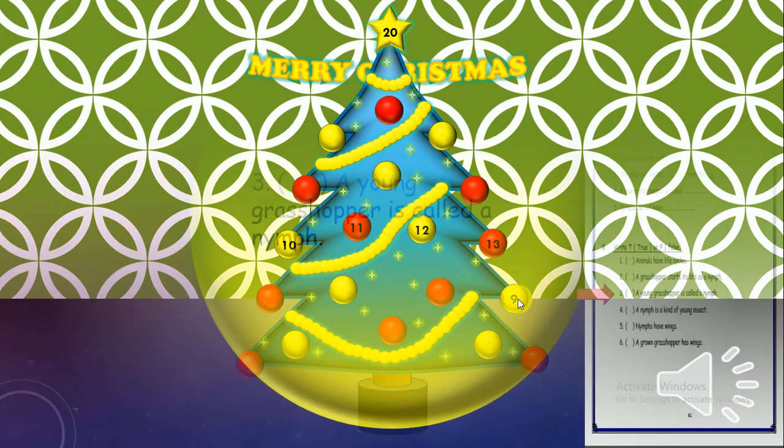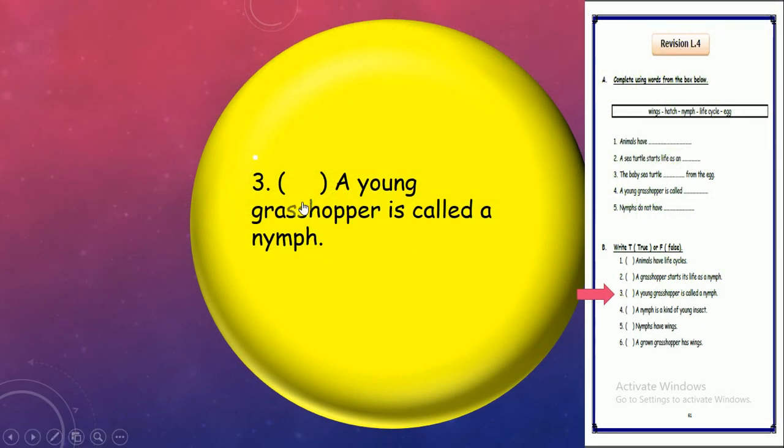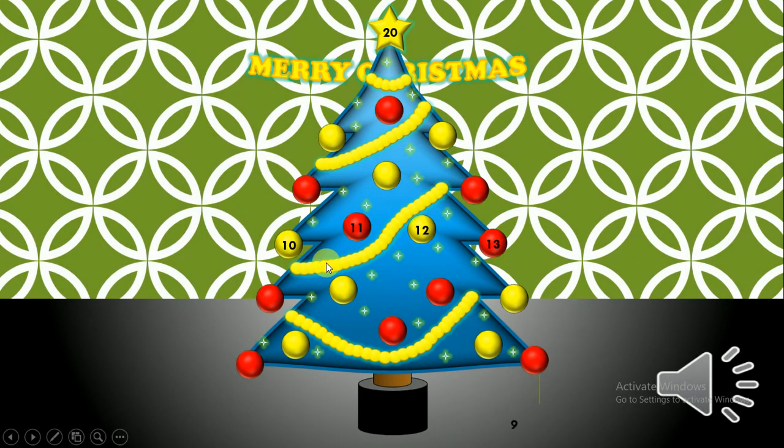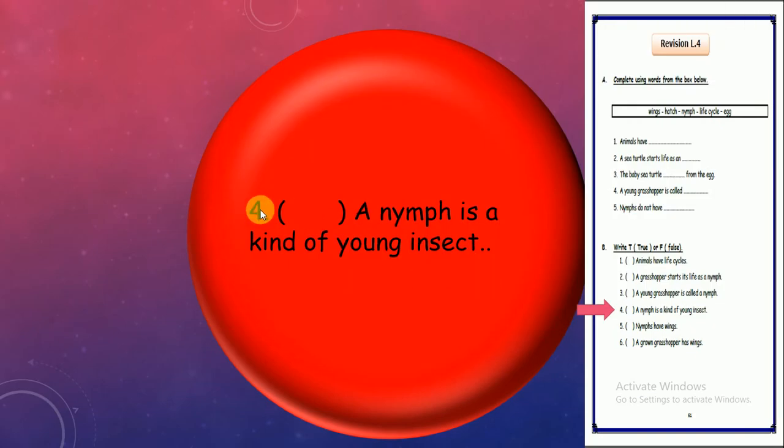Number 9, it's 3, true or false: A young grasshopper is called a nymph. So true. Excellent! Number 10, it's 4, true or false: A nymph is a kind of young insect. True. Excellent! A nymph is a young insect.